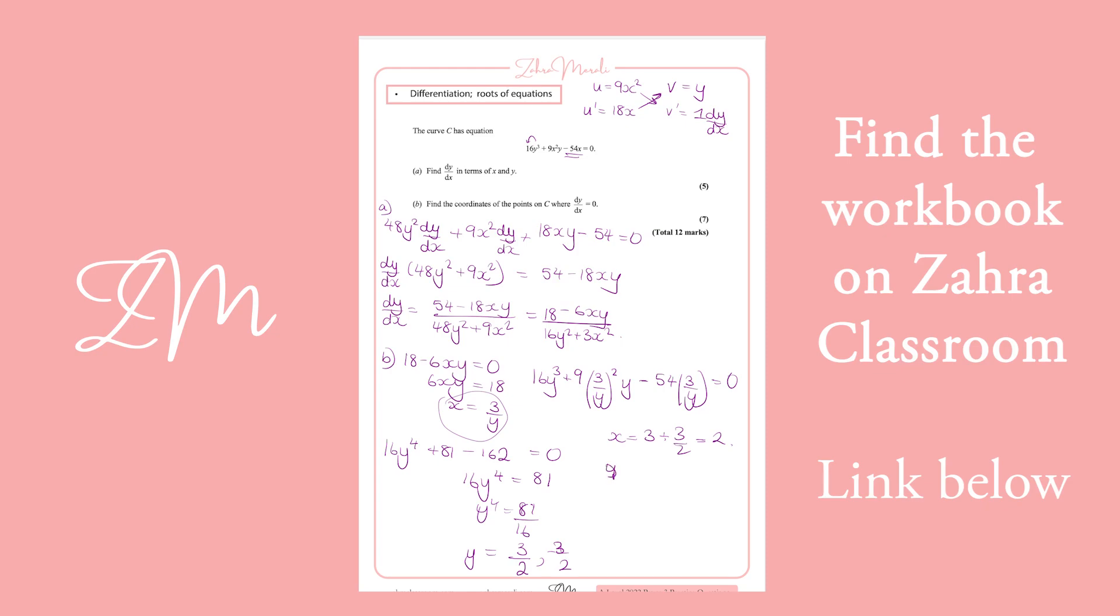And the other x coordinate is 3 divided by -3/2, so we get -2. Hence our coordinates are (2, 3/2) and (-2, -3/2). Okay, so I hope...